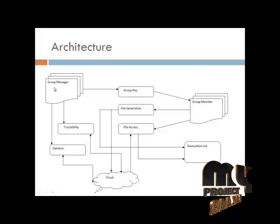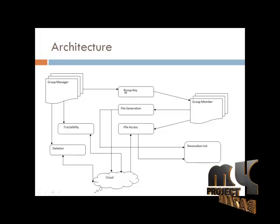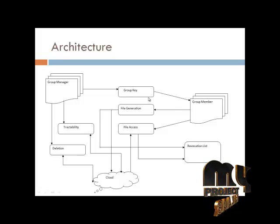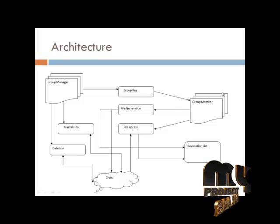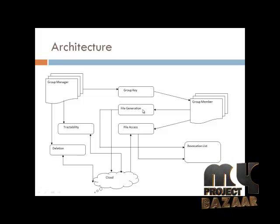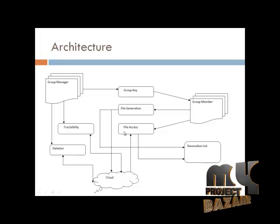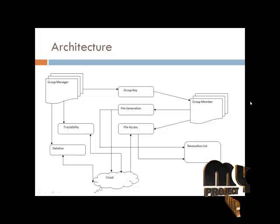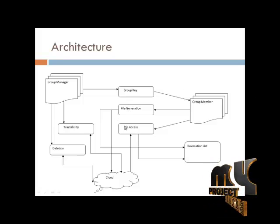The group manager part is mainly used to decide the group key. The group key is sent and assigned to the group member. The group member acts in two phases: the file generation part and the file access part. File generation and file activities go to the cloud. File access details are retrieved from the cloud by the group member.